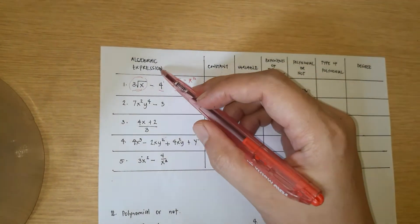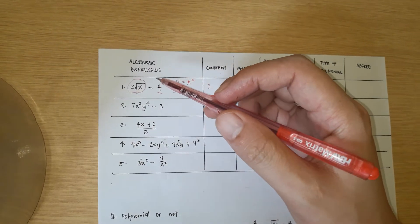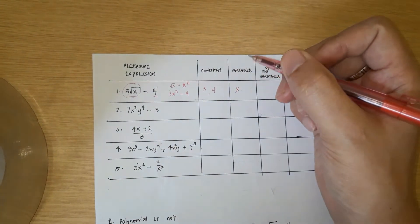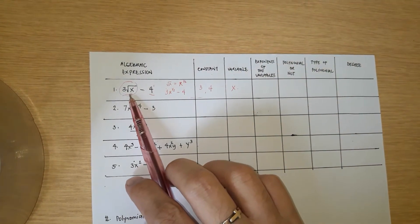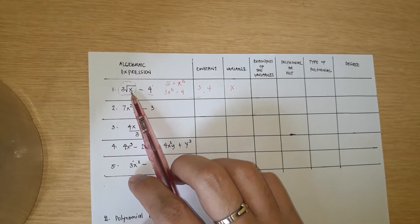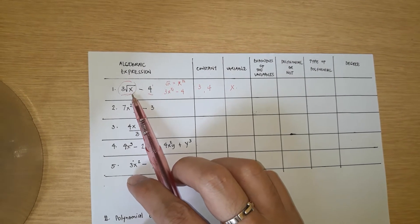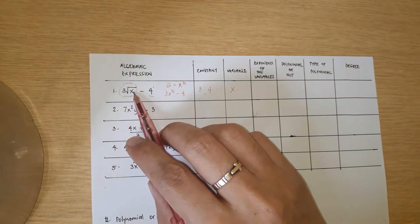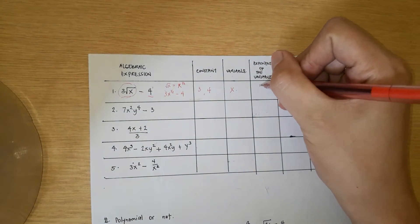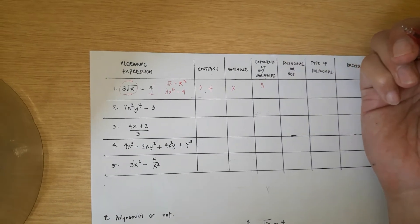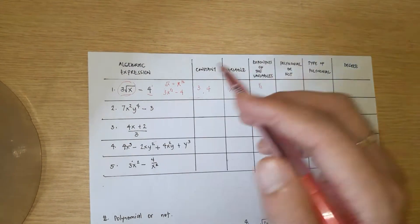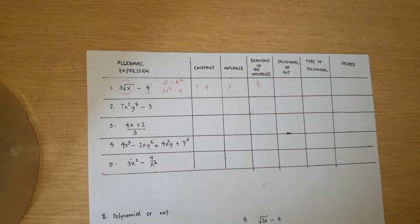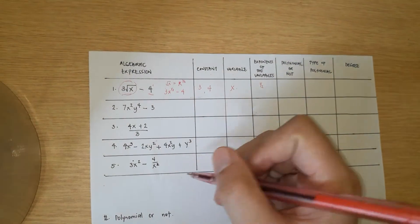So in this algebraic expression, the constants are 3 and 4 — the numbers. The variable is x — the only letter present. The exponent of x is 1/2, since it's under a square root. Is this a polynomial? Not all algebraic expressions are polynomials. A polynomial requires that there be no variable in the denominator.